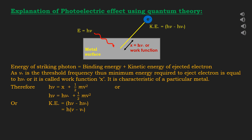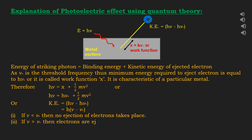By taking Planck's constant common: kinetic energy = h(ν − ν₀). Here ν is the frequency of incident radiation and ν₀ is the threshold frequency. Two cases may arise: First, if the frequency of incident radiation is less than threshold frequency ν₀, then no ejection of electrons takes place. Second, if the frequency of incident radiation is greater than threshold frequency ν₀, then electrons are ejected and the extra energy is converted to kinetic energy of the ejected electrons.